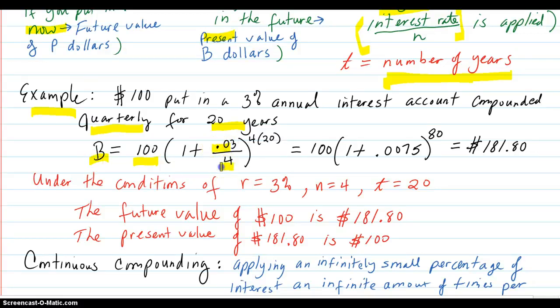So you take the 3% divide by 4, and you're really going to have 80 periods there because it's 20 years, four each. So you take the smaller amount of interest rate and hit it four times per year on the amount you have and it all adds up. And over the 20 years you're going to have $181.80.